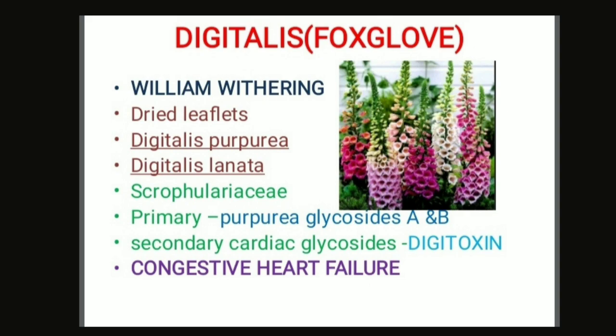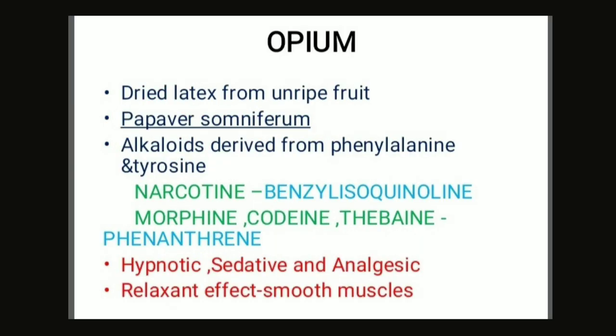Next, we'll talk about crude drugs that contain alkaloids. The first one is opium. Opium is the dried latex obtained by incision from unripe capsules of Papaver somniferum. When you hear the name opium, you must know it is an unorganized drug, because latex does not have a definite cellular structure.